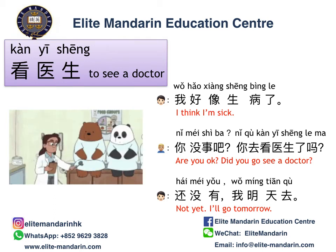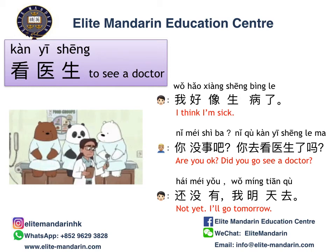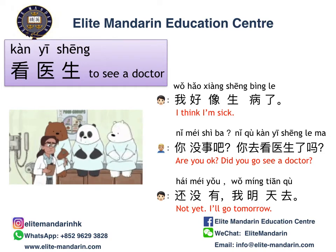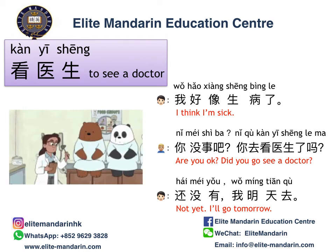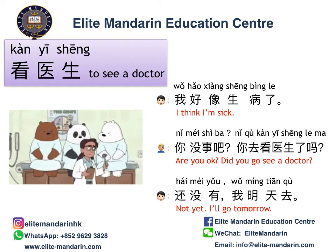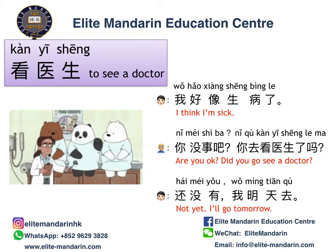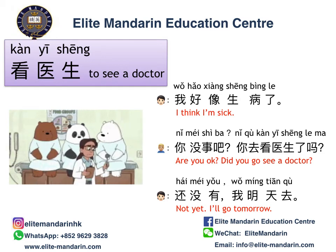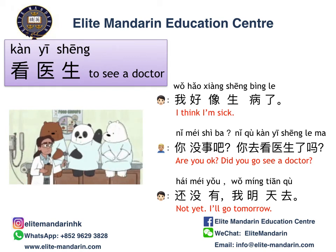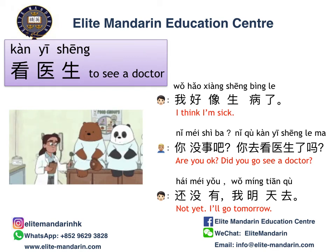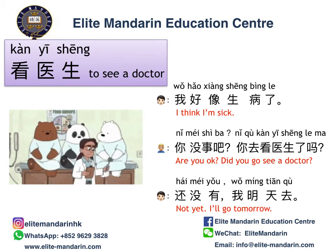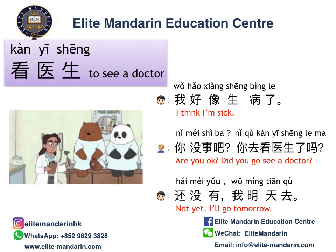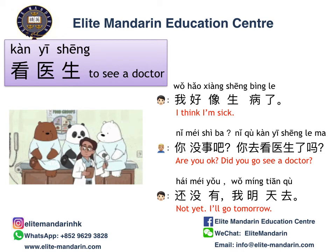Now let's look at this conversation together. A: 我好像生病了。(It seems like I'm sick.) B: 你没事吧？你去看医生了吗？(Are you okay? Did you go see a doctor?) 你没事吧 means 'Are you alright?' A: 还没有，我明天去。还没有 means 'not yet.' I will go tomorrow.